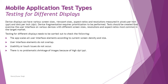The next topic in this segment is testing for different types of displays. Different devices come with different screen sizes, and we need to ensure the app works fine across all device display sizes. If an app is designed for larger screens and installed on a phone with a smaller screen, elements can overlap, become inaccessible, or cause many other problems. Device displays can have various screen sizes, viewport sizes, aspect ratios, and resolutions measured in pixels per inch (PPI) and dots per inch (DPI). Device fragmentation requires further prioritization, and tests should cover UI across devices with different screen sizes, resolutions, and aspect ratios most common in the target market.